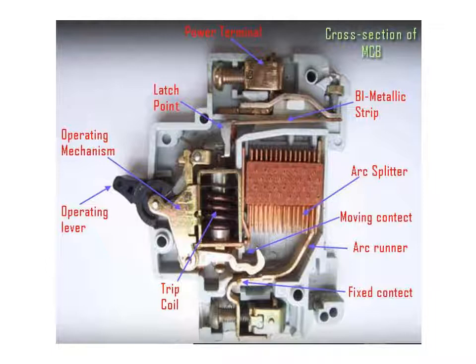In normal conditions, the moving contact and fixed contact are joined. In abnormal conditions, the moving contact moves away from the fixed contact and the circuit opens. Arc splitters are used to extinguish the arc that forms when the contacts separate. Arc splitters lengthen the arc, increasing its resistance until the arc is finally extinguished.